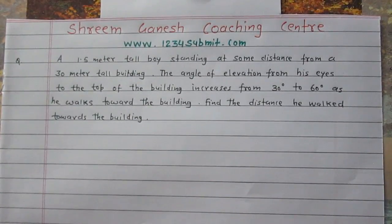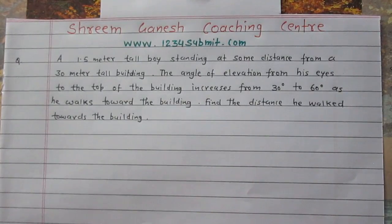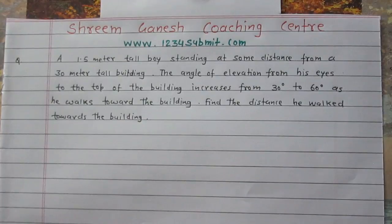In this question, we are told that a 1.5 meter tall boy standing at some distance from a 30 meter tall building, and the angle of elevation from his eyes to the top of the building increases from 30 degrees to 60 degrees as he walks toward the building. And we are to find the distance he traveled.